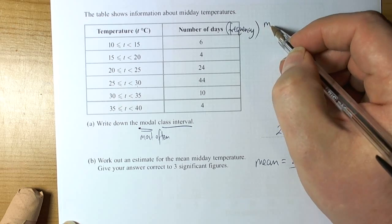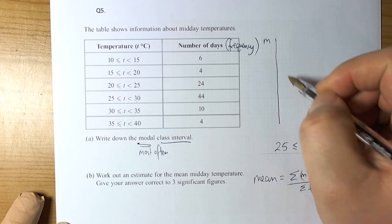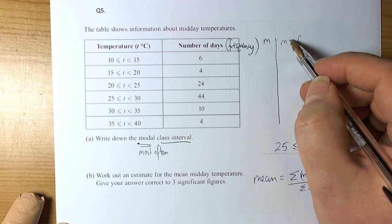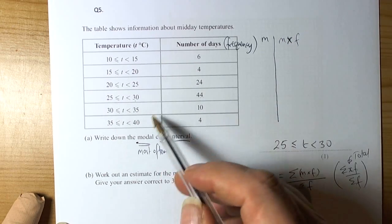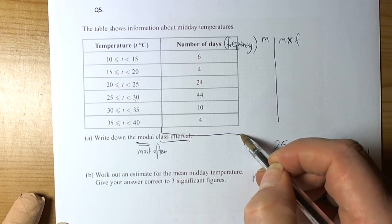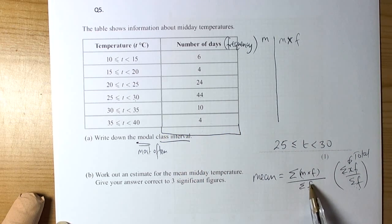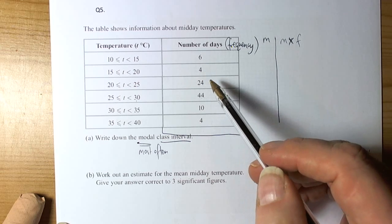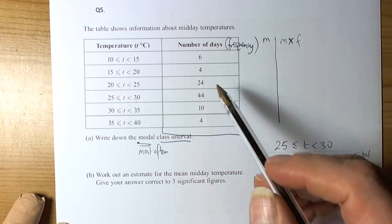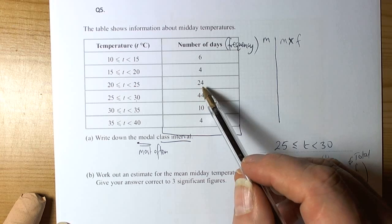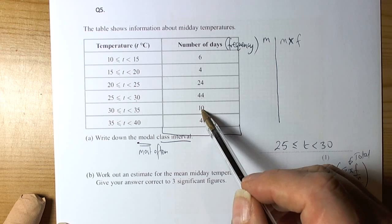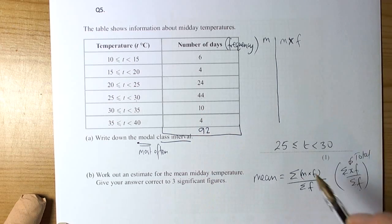The idea is that you would add on an extra column for the midpoint values, and then you would show the midpoint times the frequency calculations to be able to work out what all the temperatures added up for, for all these days. We do need to know how many days there are altogether. So we've got 10, 30, 34, 74, 78, 88, 92. So there's 92 days of data in this table.